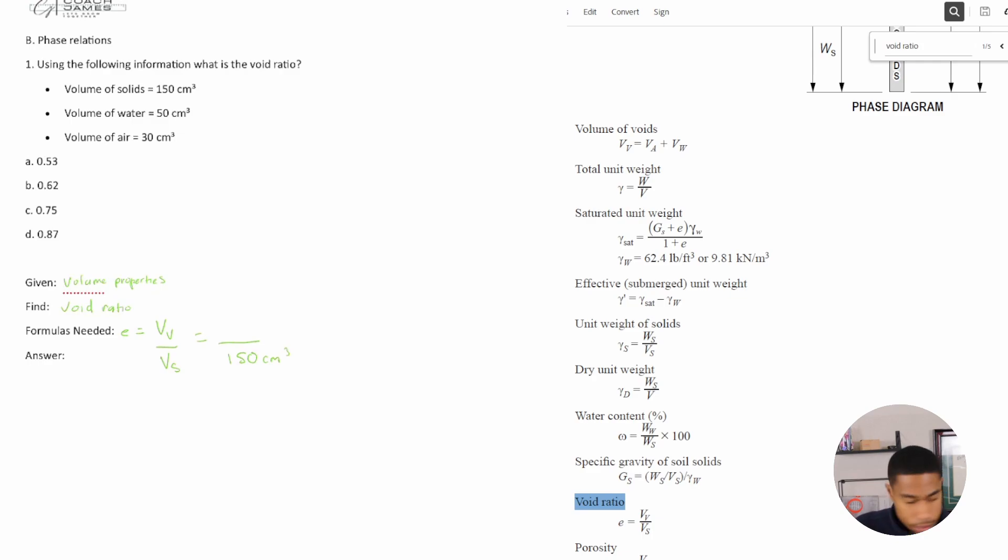What about my volume of voids? Volume of voids here. They don't give us volume of voids, but they do tell us in our handbook that volume of voids is equal to volume of air plus volume of water. So volume of voids is equal to 30 centimeters cubed plus 50 centimeters cubed, so 80 centimeters cubed.